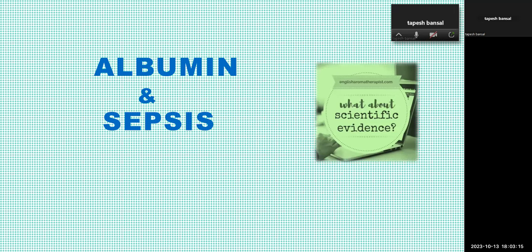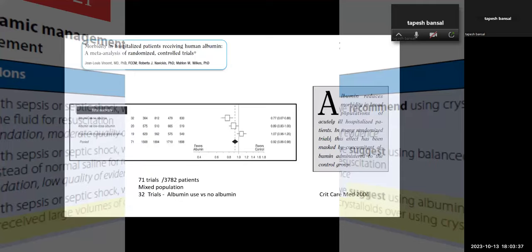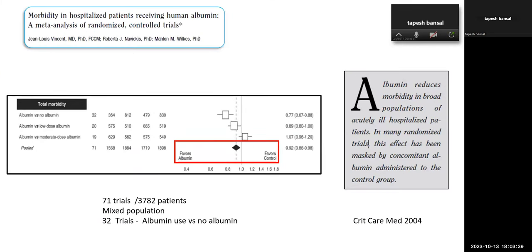The current recommendations in the Sepsis-4 guidelines for albumin state it is recommended if there is large volume of crystalloid utilization, with no other firm indication. But can we use albumin in other ways — does it help? Back in 2004, a meta-analysis was done by the great intensivist Jean-Louis Vincent from Belgium.